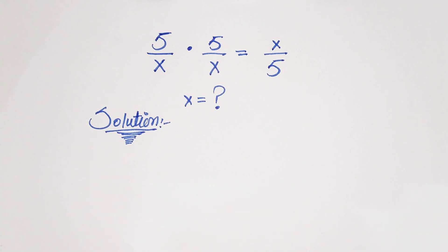Hello everyone, welcome back to Minimax Club. Today we have a nice problem: 5 over x multiplied by 5 over x is equal to x over 5. We have to find the value of x.